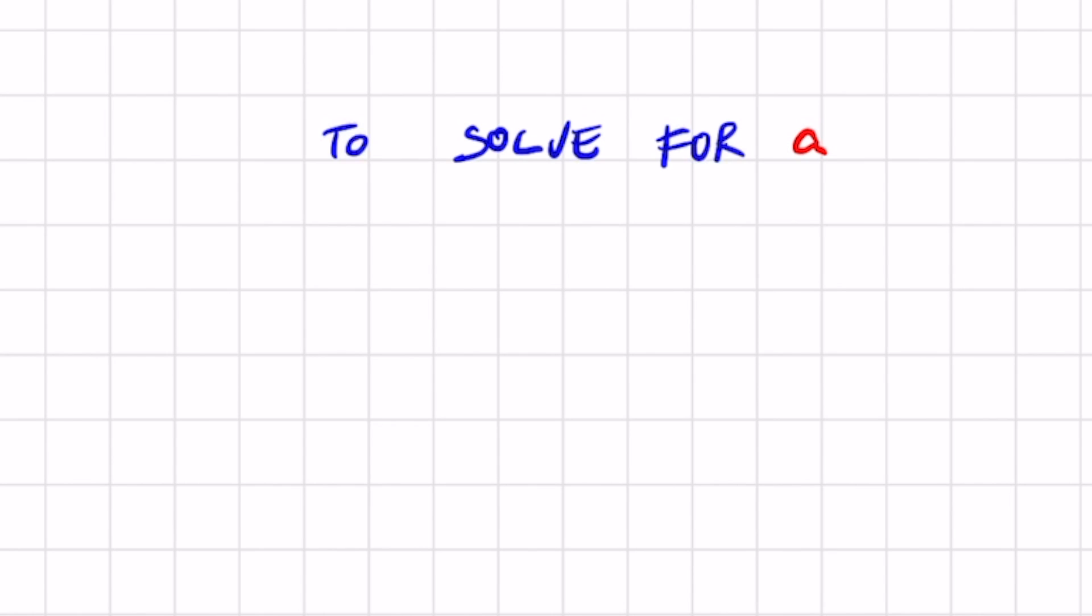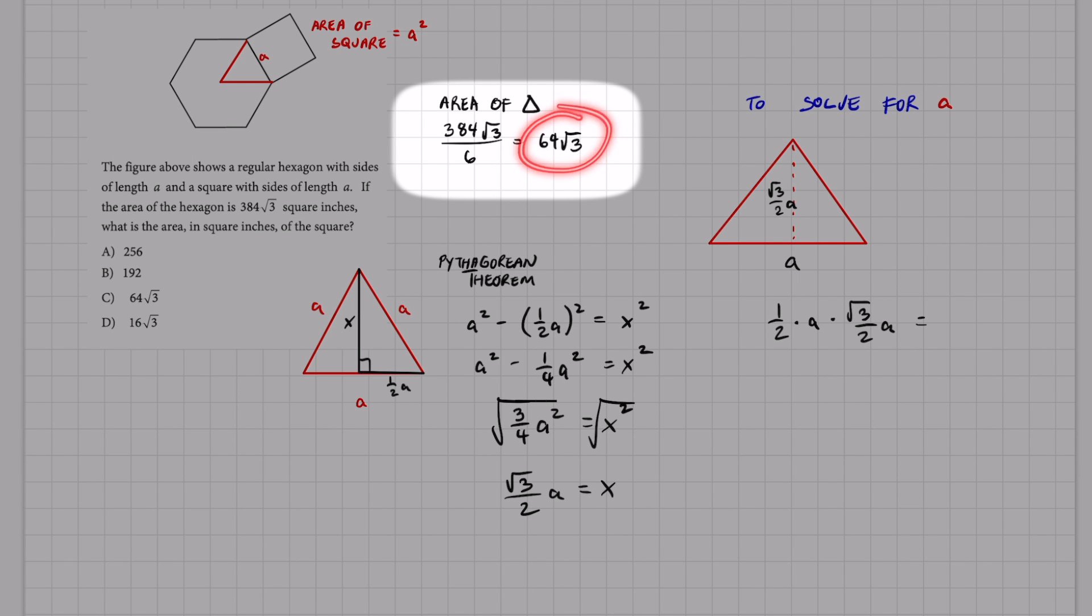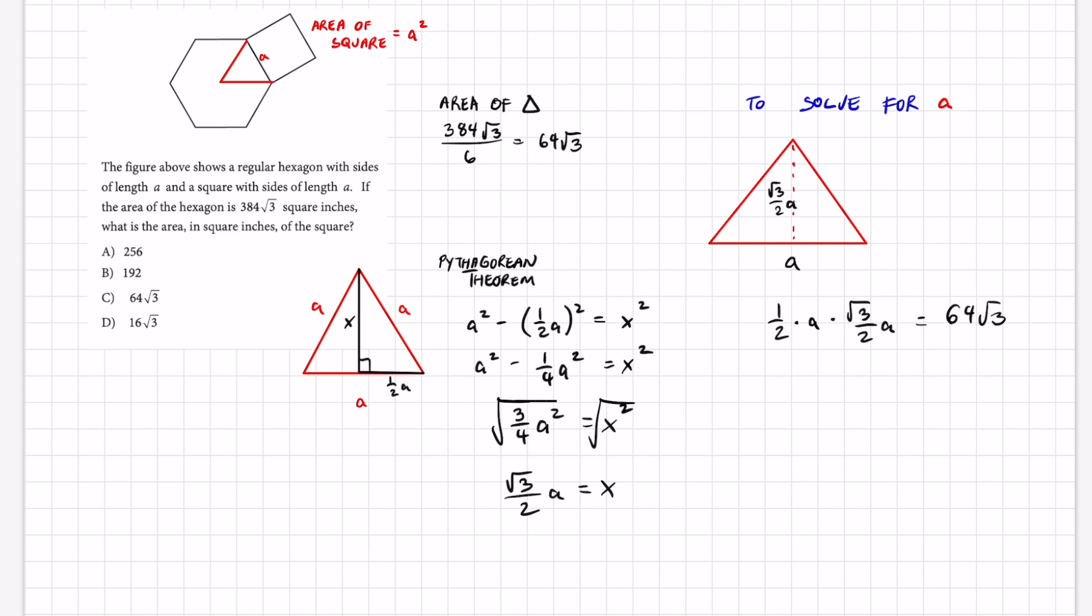To solve for A, let me redraw that triangle for you, but instead of calling it x, let's use this expression right here. That's going to give me this triangle. It's got a height of root three over two A and it's got a base of A. I'm going to pop that into the formula for the area of a triangle which equals one half base times height. It's going to be one half, my base is A, my height is root three over two A, and I'm going to set that equal to the area that I found earlier which is 64 root three. That's going to help me get A and then I can find the area of my square finally.